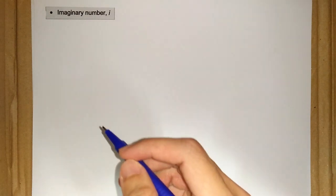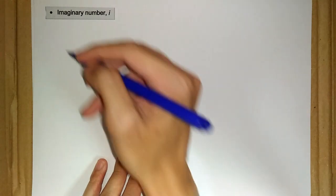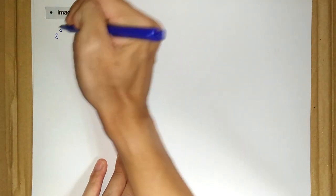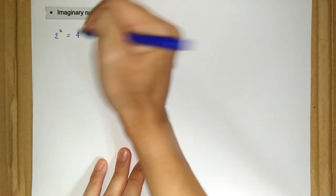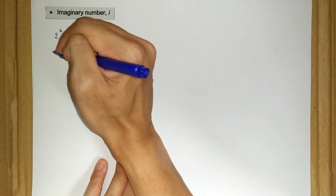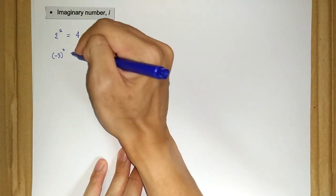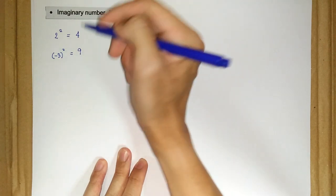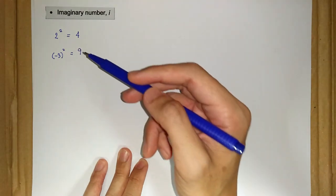When we square any real number, we will have a positive number. For instance, 2 squared is equal to positive 4. And negative 3 squared is equal to positive 9. Both of the results here are positive.